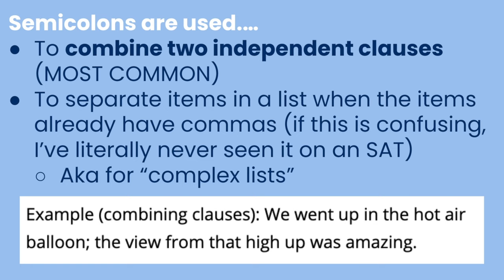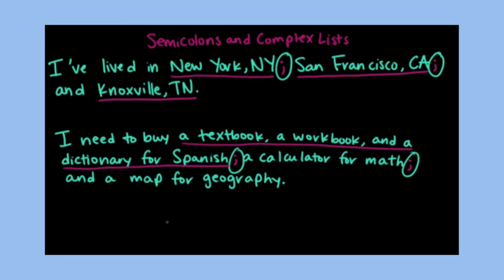I've literally never seen the complex list use on an SAT, but you should probably know it exists just in case. In the example on screen, the list items themselves already have commas — for example, 'New York, New York.' Since this happens, we separate the items with semicolons where you would normally expect a comma, and that's pretty much all there is to it.